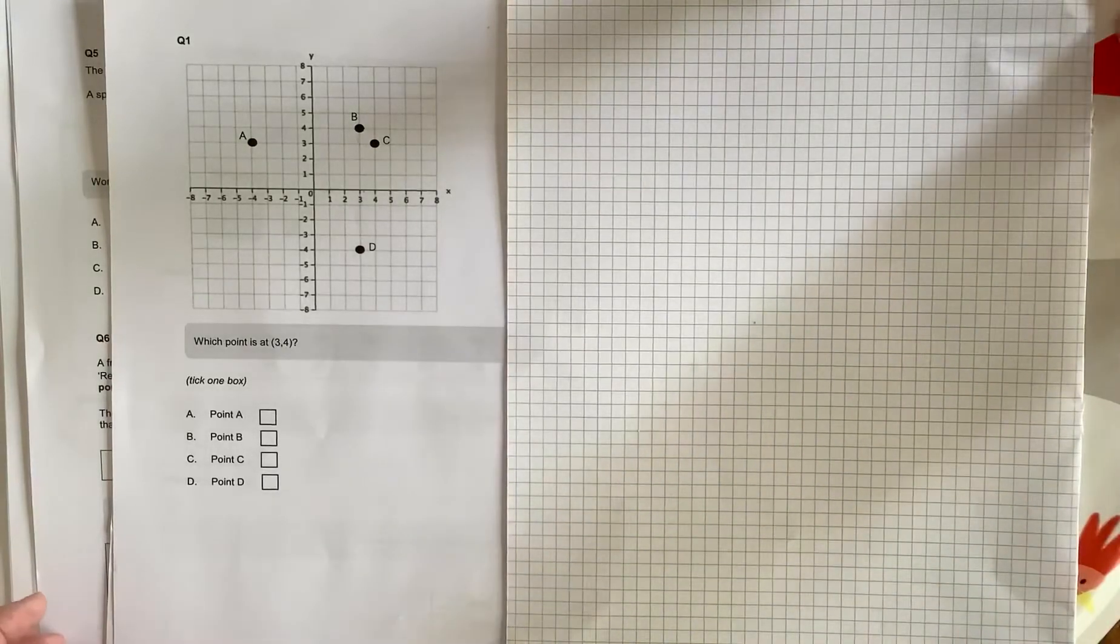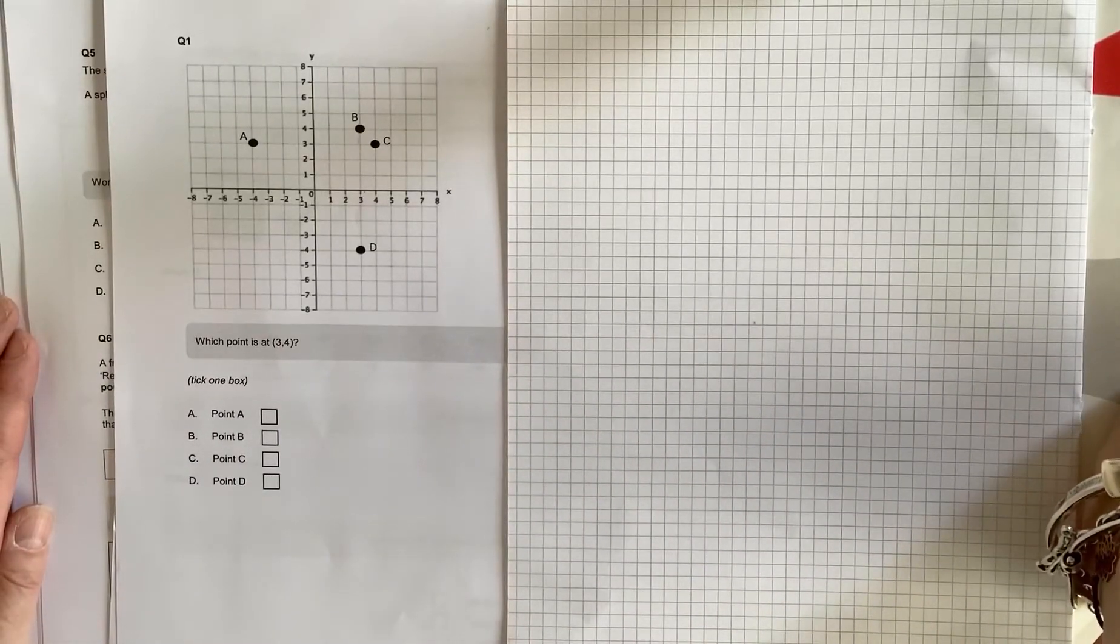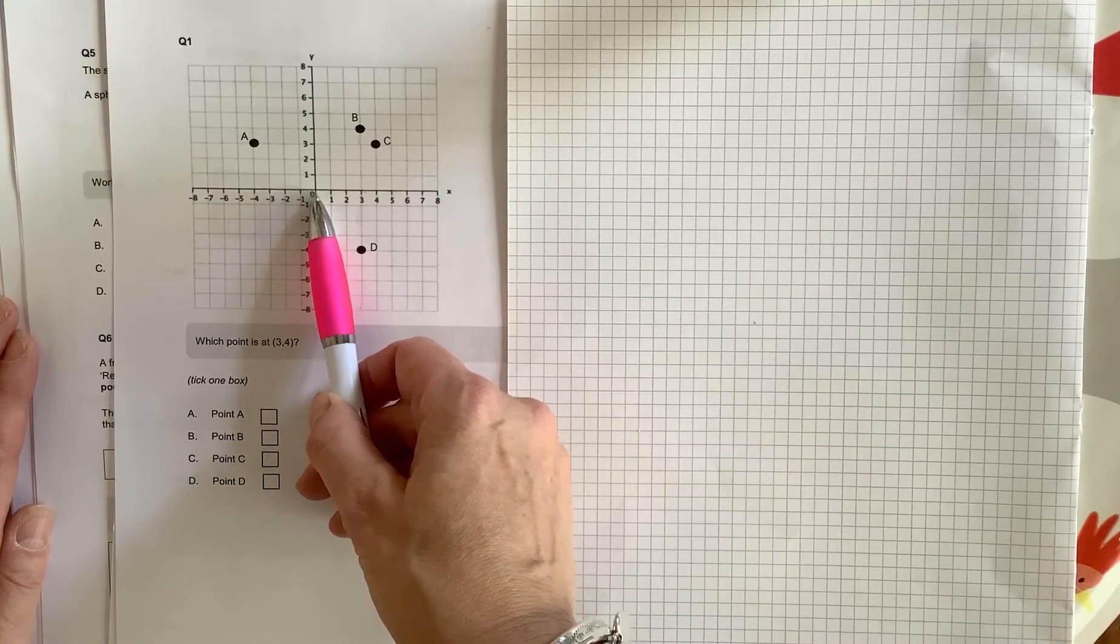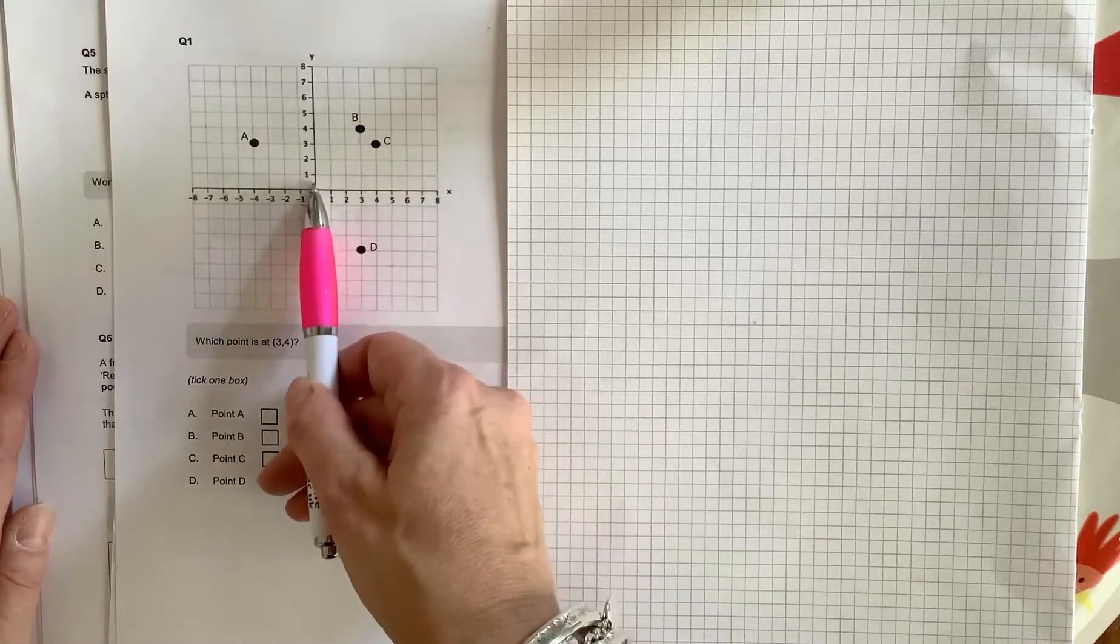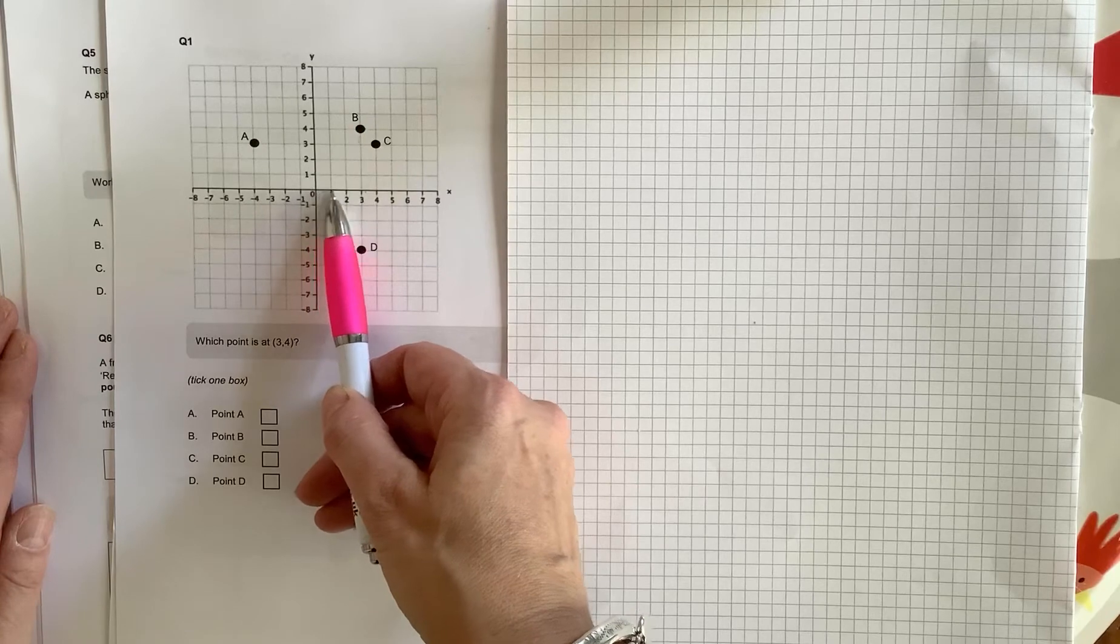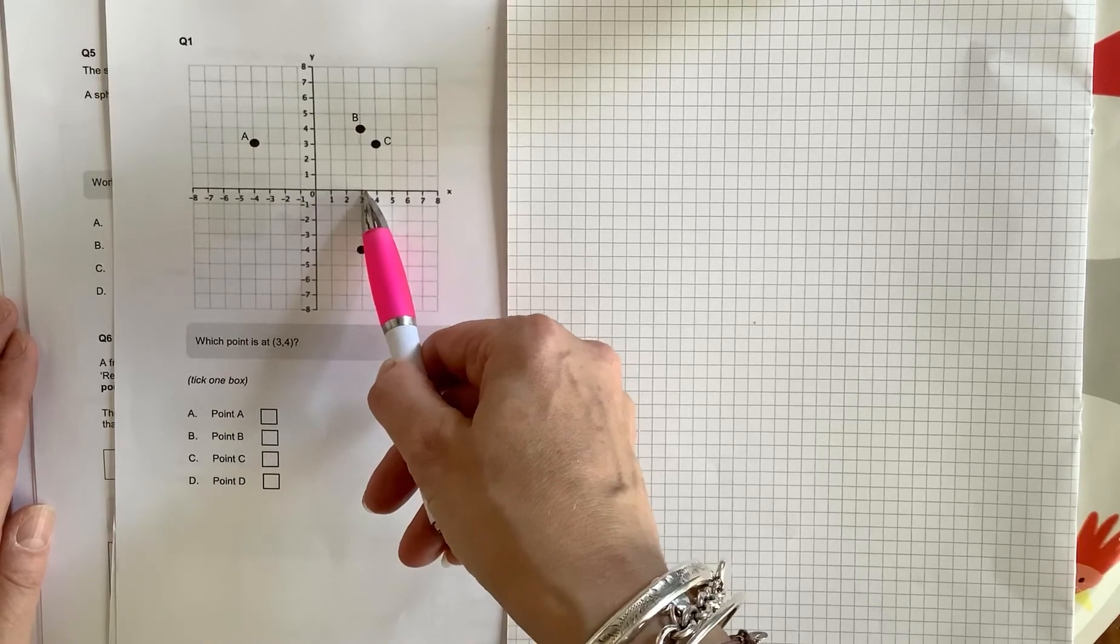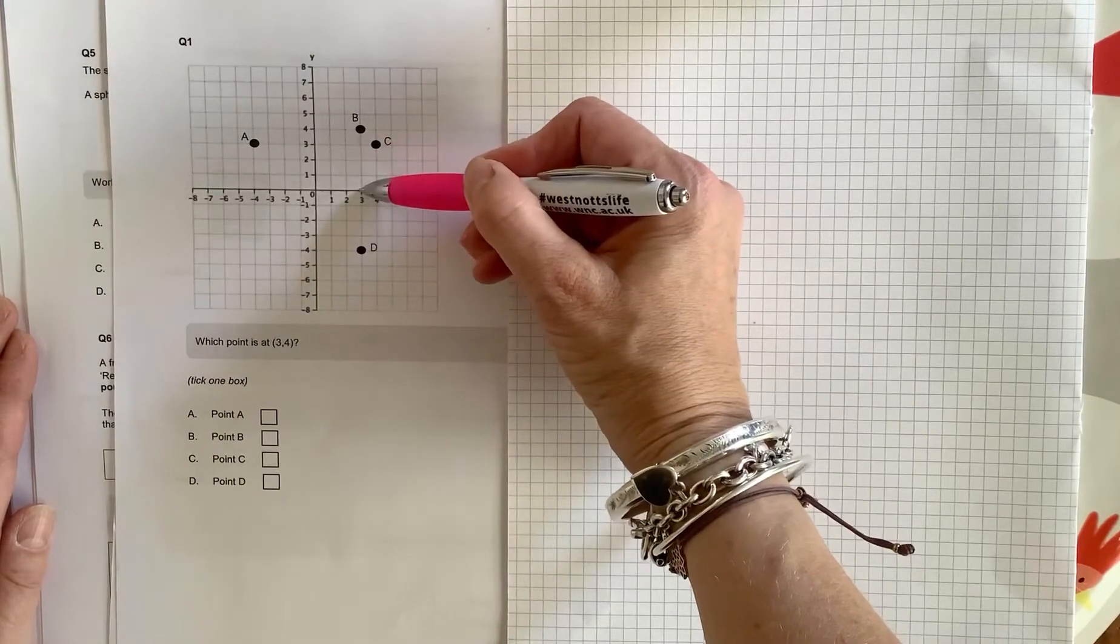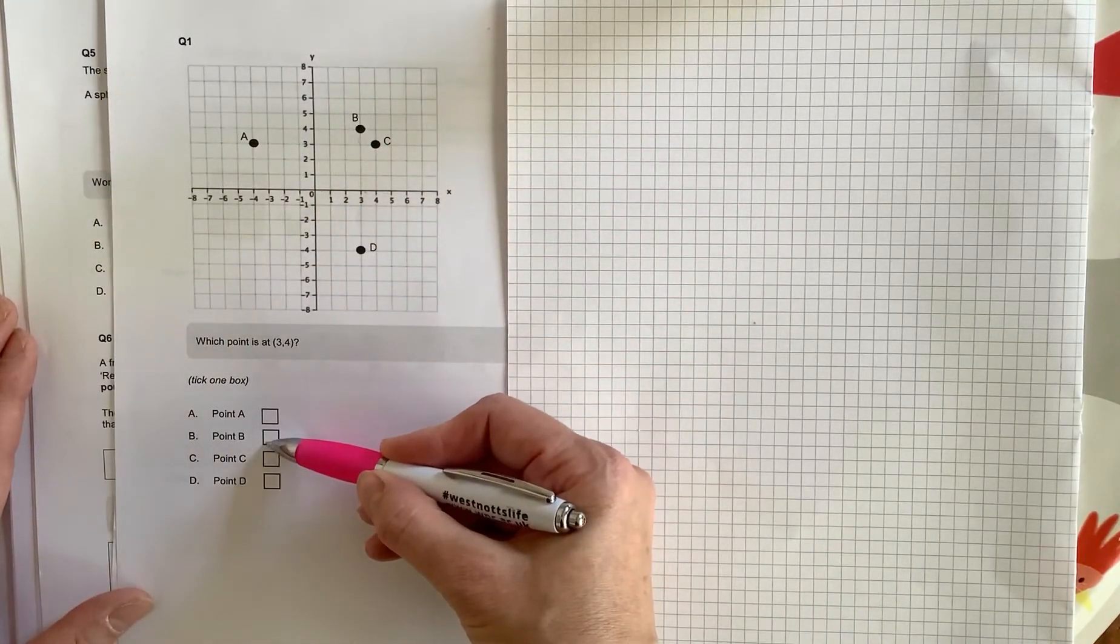So we've got some coordinates here. What point is at 3, 4? With these kind of questions, we start at 0 and we go along the corridor and up the stairs. So what that means is, if you've got a positive number first, which we have, we go this direction. If we had a negative number, we would go this direction. But we've got 3, 4. So that means we've got 3 across and then it's up or down. The 4 is a positive number, it's not negative. If it said negative 4, we would come down to here. But it's a positive 4. So we're going to go up 1, 2, 3, 4 and we find ourselves at B. So for this question, you would put a tick, nice and clearly, in B.